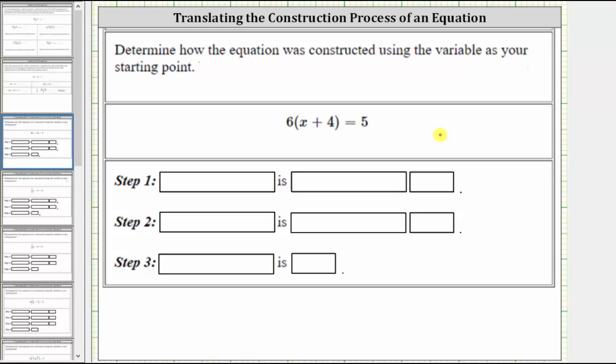Going back to the first equation, we want to describe the construction process starting with the variable. Looking inside the parentheses, notice we have x + 4.